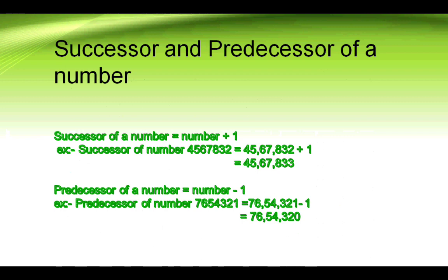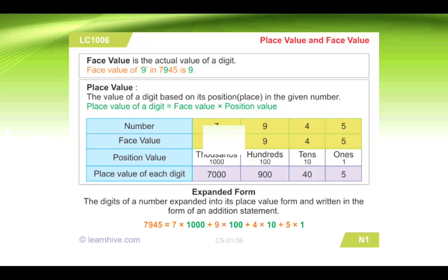Our next topic is place value and face value. Face value is the actual value of a digit. For example, the face value of 9 in 7945 is 9. Place value is the value of a digit based on its position or place in the given number. Place value of a digit equals face value multiplied by its position value.